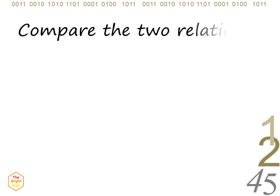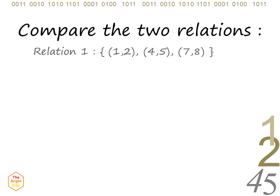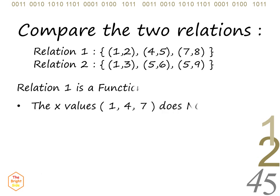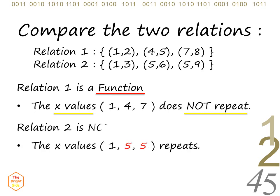To understand functions, let's compare the two relations below. Relation 1 is a function, because the x values 1, 4, and 7 do not repeat. Relation 2 is not a function, because the x value 5 repeats.